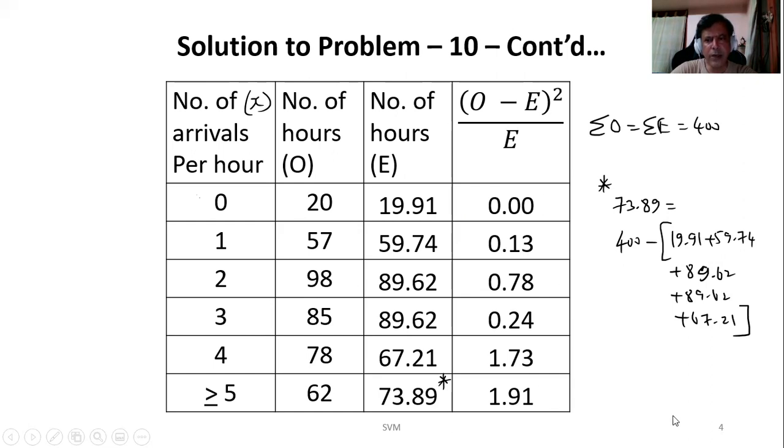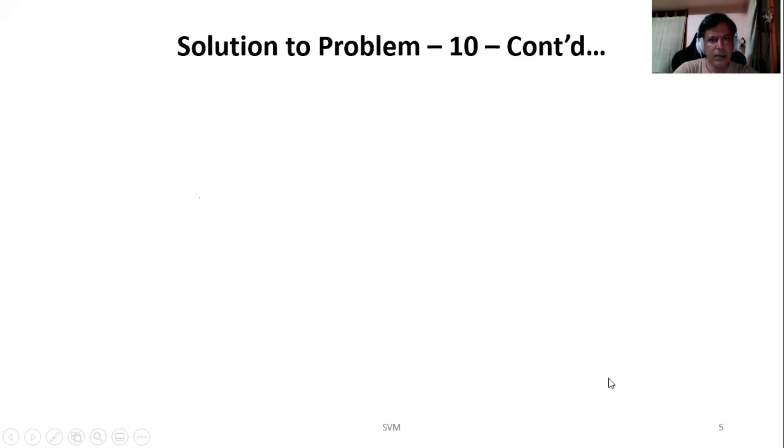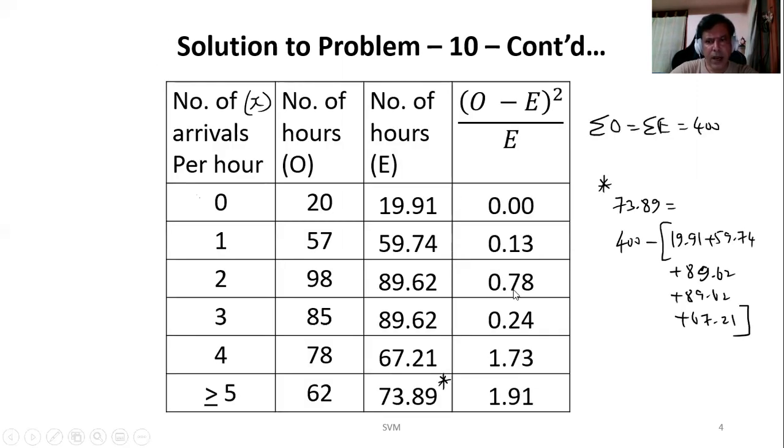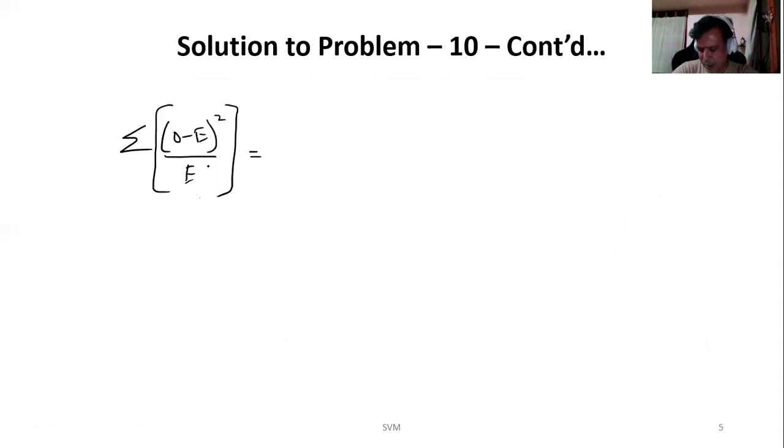Now we can calculate what is (O minus E) the whole square divided by E. By doing each one you get these values. Now sum of all this, that is if I add this (O minus E) square by E, sum of the last column, we'll get the result as 4.79. Now we got the calculated value; this is nothing but chi square cal.